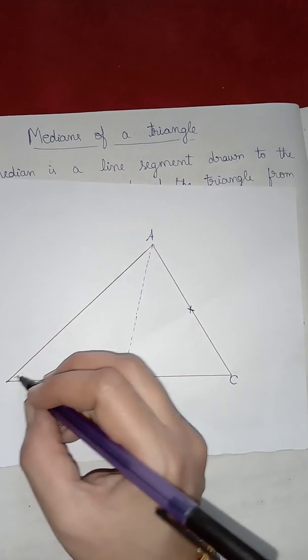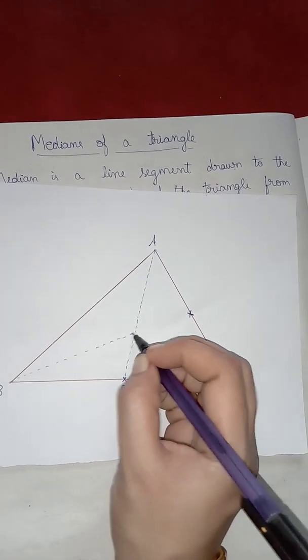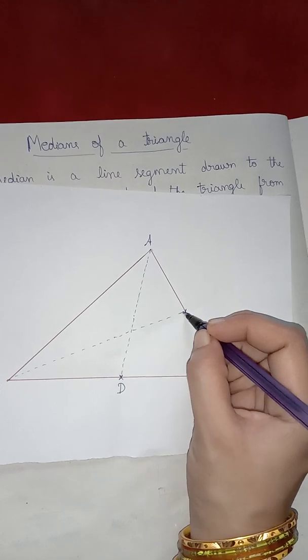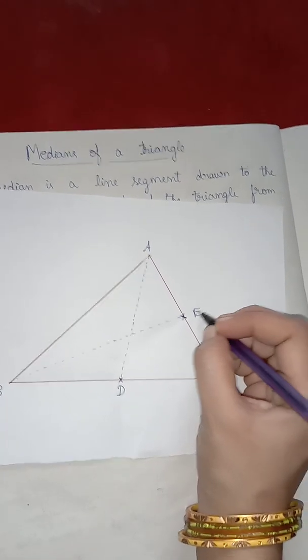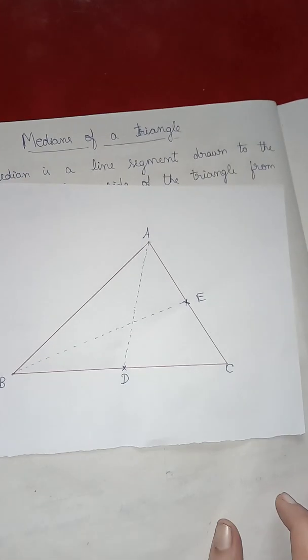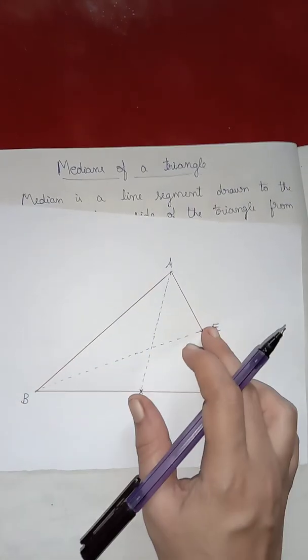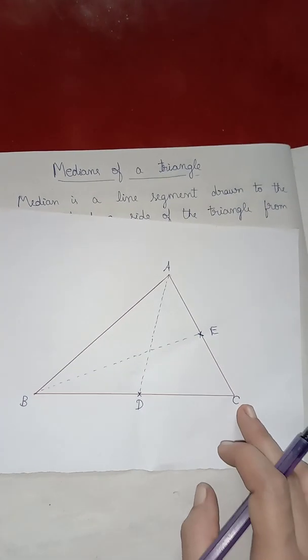So, line segment will be drawn from B to midpoint of A, C. If you mark it as E, you have here median B, E to line segment A, C.